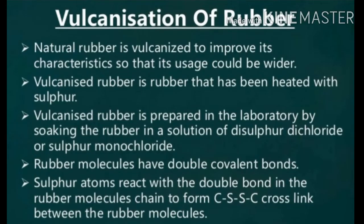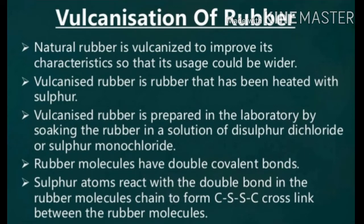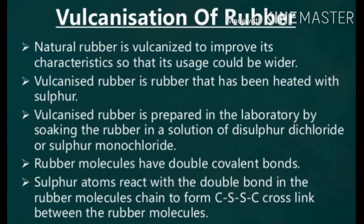Next is vulcanization of rubber. Vulcanization is the process used to improve the quality of natural rubber. Natural rubber is vulcanized to improve its characteristics so that its usage could be wider. After vulcanization, its characteristics improve and its use will be more and more.